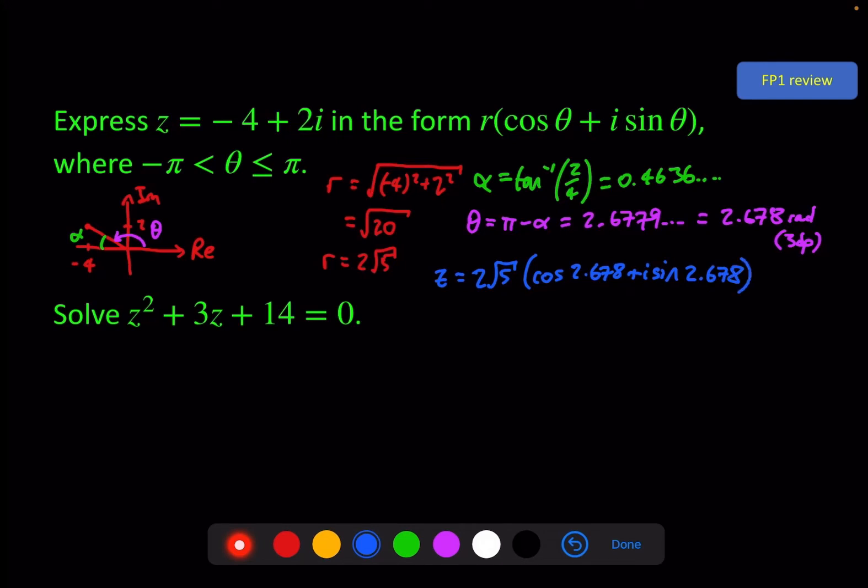Next one, solve this equation: z² + 3z + 14 = 0. Now remember, if it's z, that implies, but not definitely, it implies that we're going to have complex number solutions. Because it's a second-order polynomial, we should have two solutions in total, whether complex or real.